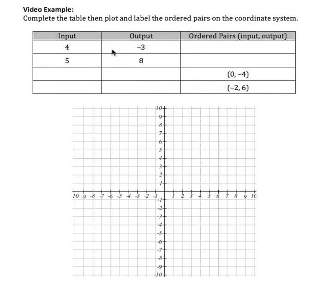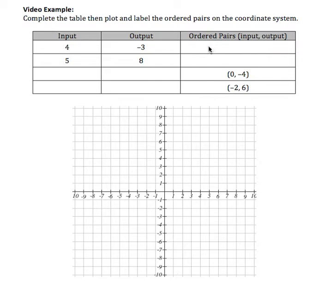Here I am asked to complete the table and then label the ordered pairs and plot them on the coordinate system. My table represents input, output coordinates and the associated ordered pairs, and how that corresponds to the graph. The input coordinates go in the horizontal direction, the output coordinates go in the vertical direction. Let's see how the ordered pairs are going to show up on the graph.